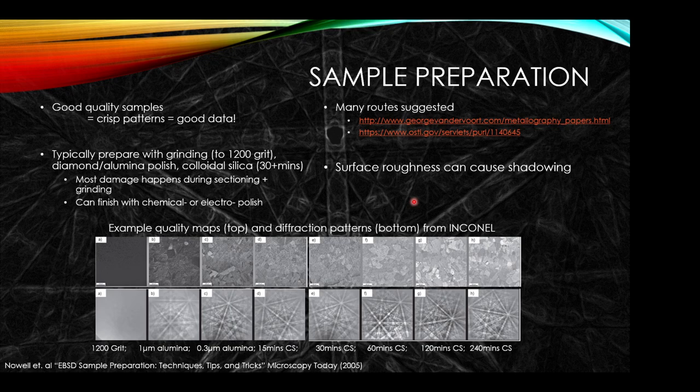For sample preparation, many of you will have to do metallography. You'll be doing polishing to effectively remove any impact of the sectioning process and get access to the crystals. If we remember that the EBSD signal is formed from the top 20 nanometers, we have to have a very good quality surface finish. This is a beautiful experiment conducted by Matt Null, showing that if you improve and increase the duration — decreasing the size of the media and increasing the duration — you can increase the clarity of the diffraction patterns.